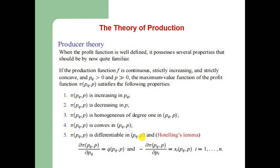Finally, we may also discuss the profit function. When the profit function is well defined, it possesses several familiar properties. If the production function is continuous, strictly increasing, and strictly concave, with pq > 0 and input prices strictly positive, the maximum value profit function satisfies: it is increasing in pq; it is decreasing in input prices p; it is homogeneous of degree 1 in pq and p; it is convex in pq and p; and it is differentiable in pq and p — which is Hotelling's Lemma.